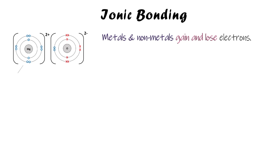Magnesium forms a magnesium ion with a 2+ charge — a positive charge — and that is our metal ion. Then we've got an oxygen atom that has gained two extra electrons to form a negative oxide ion, which is our non-metal. Because one ion is positive and the other is negative, there will be an attraction between them.